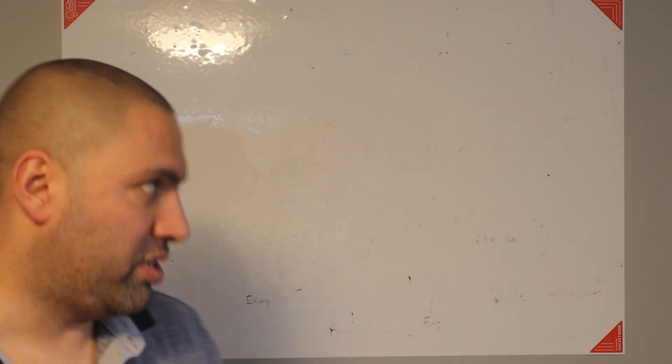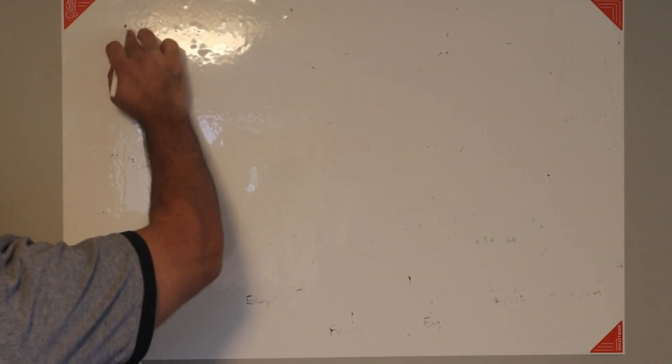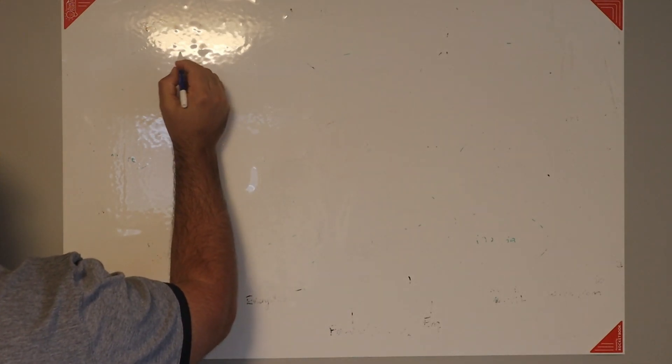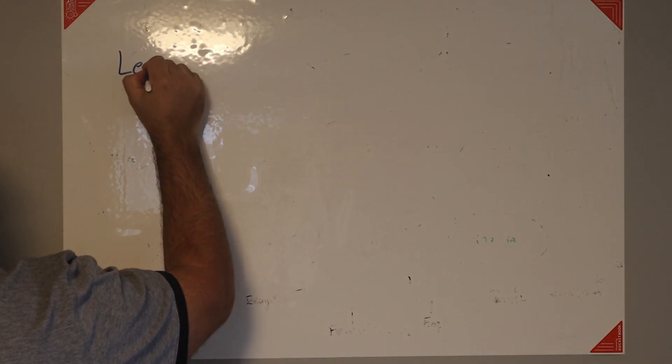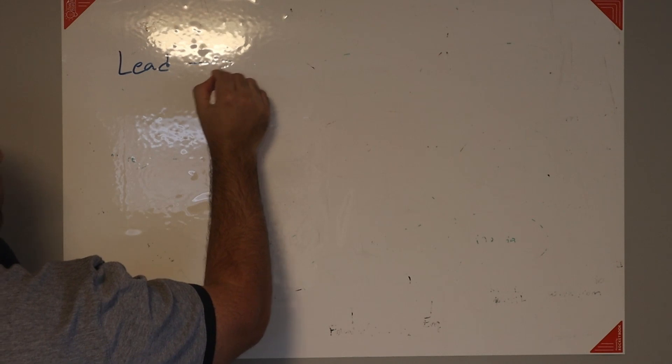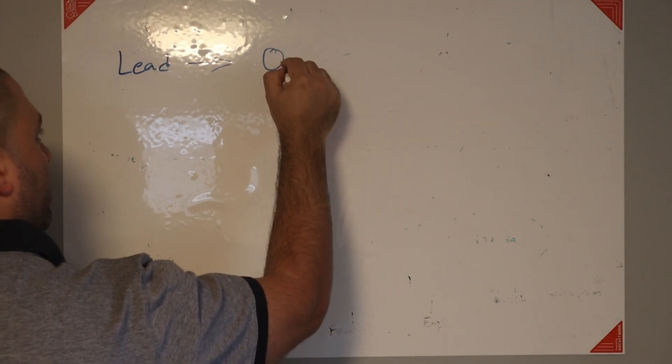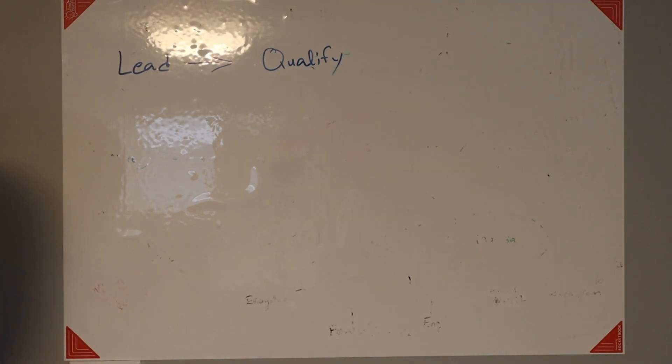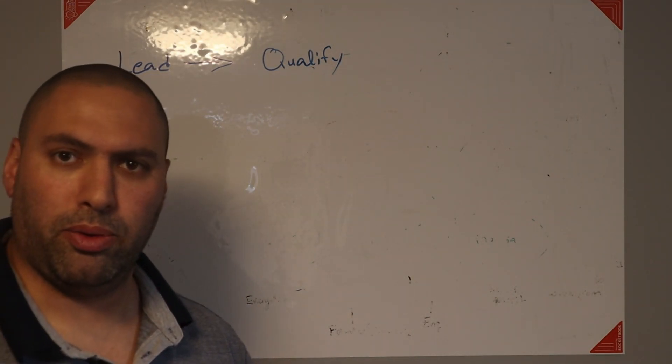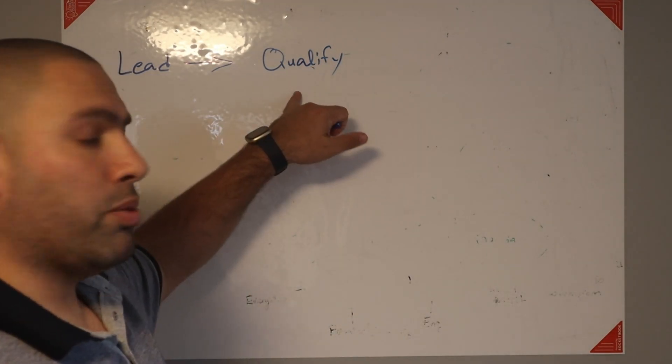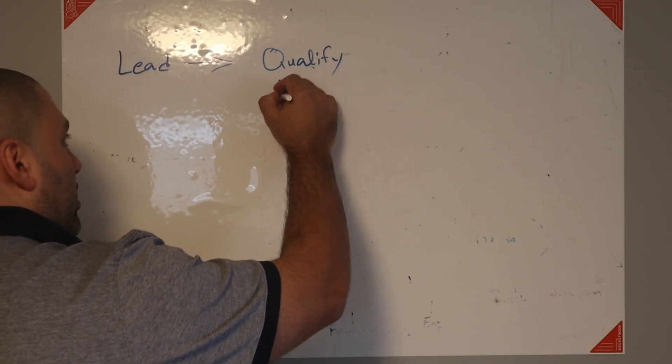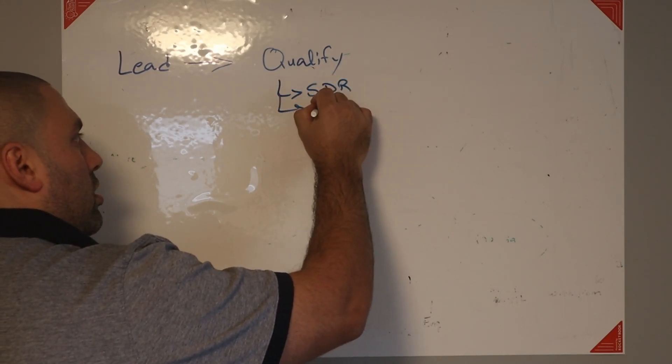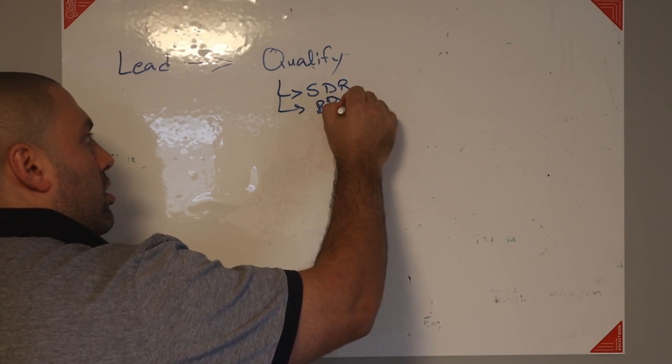So let's think about the sales cycle. Generally speaking, I need to clean my whiteboard a little bit better, but hey. So you have a lead coming in, and then someone qualifies it, in theory. And by the way, I'm bad at spelling, so if you see any typos, let me know. Someone's qualifying the deal. Now, this is usually an SDR, BDR, or DR.